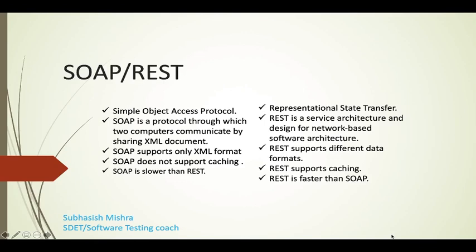SOAP is a protocol through which two computers communicate by sharing XML documents. REST stands for Representational State Transfer — it's a service architecture designed for network-based software. SOAP supports only XML format, whereas REST supports different data formats like JSON, XML, and text. SOAP doesn't support caching while REST supports caching, and SOAP is slower than REST.